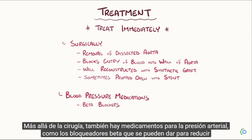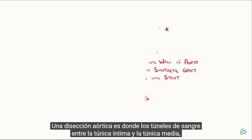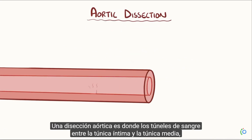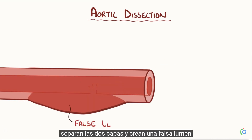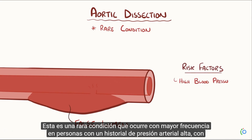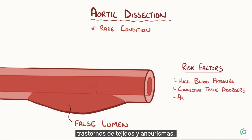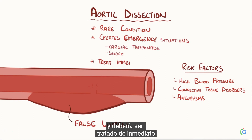Beyond surgery, blood pressure medications like beta blockers might be given to reduce blood pressure. As a quick recap: aortic dissection is where blood tunnels between the tunica intima and the tunica media, separating the two layers and creating a false lumen. This is a rare condition that most often happens in individuals with a history of high blood pressure, connective tissue disorders, and aneurysms. An aortic dissection can lead to emergency situations like cardiac tamponade and shock, and should be treated immediately.